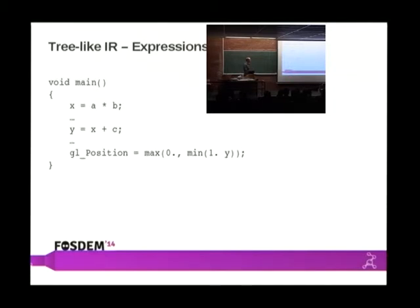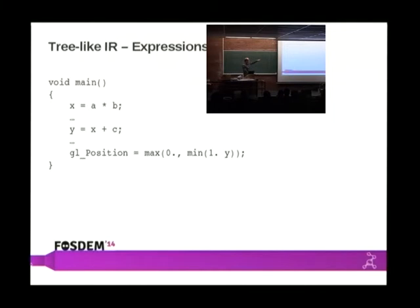There's also the difficulty that if what the developer has written is code where the multiply and the add don't end up naturally in the same tree, the tree processor will completely miss that it could generate the value using a single MAD instruction. To overcome this, we had to write a really awful pass in the compiler — if you look in the Mesa source code, there's a file called opt_tree_grafting — that tries to find these places and merge trees together. It takes the tree that generates X and puts it in place of the dereference of X in that expression. It's a horrible piece of code, and I've had to apologize to Eric several times for it.